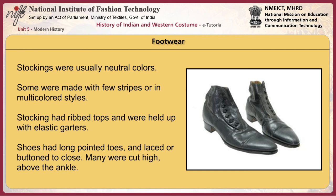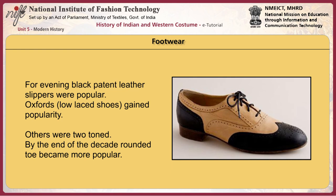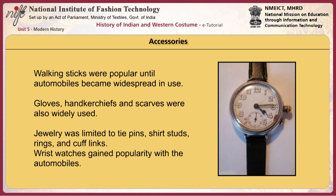For footwear, stockings were usually neutral colours, some made with few stripes or in multicoloured styles. Stockings had ribbed tops and were held up with elastic garters. Shoes had long pointed toes and laced or buttoned to close. Many were cut high above the ankle. For evenings, black patent leather slippers were popular. Oxfords, which were low-laced shoes, gained popularity. Others were two-toned. By the end of the decade, the rounded toe became more popular. Accessories included gloves, handkerchiefs, and scarves. Walking sticks were popular until automobiles became widespread. Jewellery was limited to tie pins, shirt studs, rings, and cufflinks. Wrist watches gained popularity with the automobile.